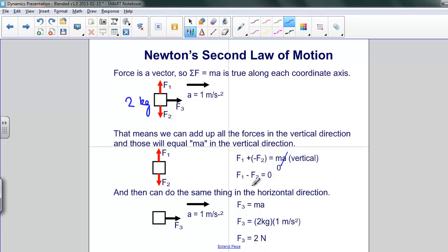We can do the same thing in the horizontal direction. This time we have a force F3, and it's the only one acting, and it's equal to MA. And we do have a value for A, it's one meter per second squared. And we've got the two kilograms that I've associated with this particular object. So, our final force, the force that's actually pulling this along or pushing this along is two newtons.